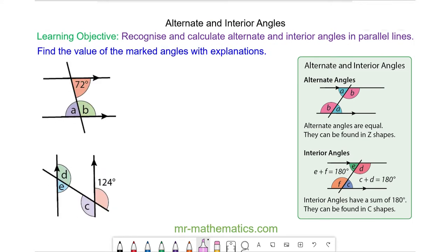In this question we can see the 72 degree angle is in a z-shape with angle A. So 72 degrees is equal to angle A because these are alternate and therefore equal.